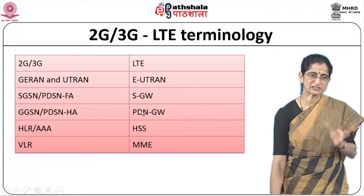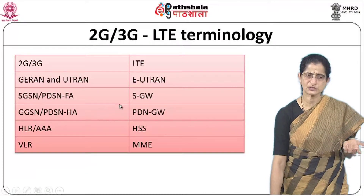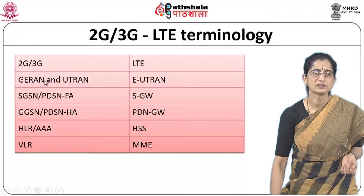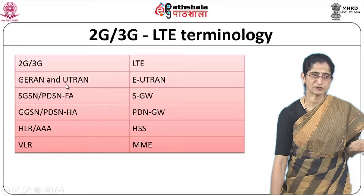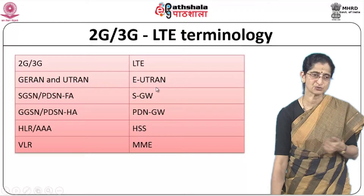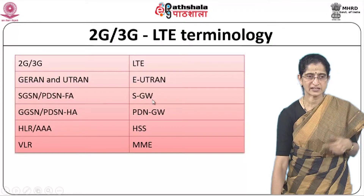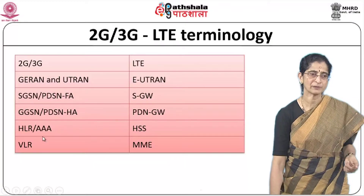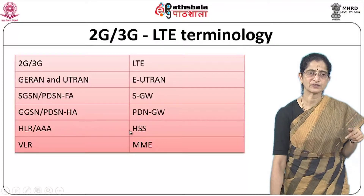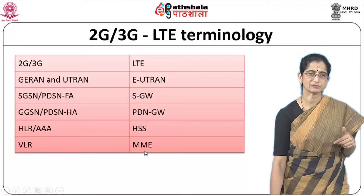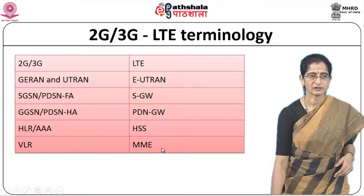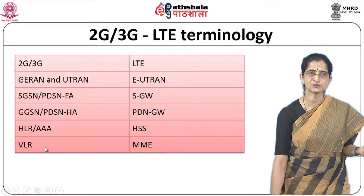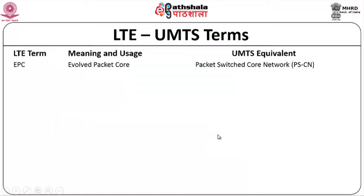Looking at 2G, 3G, and LTE terminology equivalences: UTRAN becomes E-UTRAN; SGSN becomes S-Gateway; GGSN becomes PDN Gateway (P-Gateway); HLR and AAA become HSS; VLR is handled by MME (Mobility Management Entity). The LTE term 'Evolved Packet Core' corresponds to UMTS's 'Packet Switched Core Network.' The serving gateway (SGW) in LTE corresponds to the SGSN function in UMTS, and HSS corresponds to the Home Location Register (HLR).